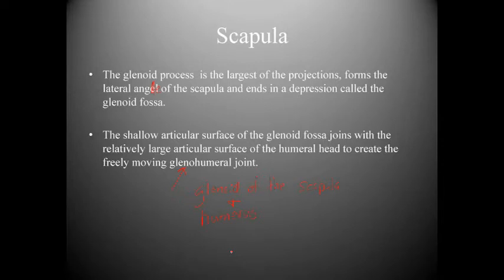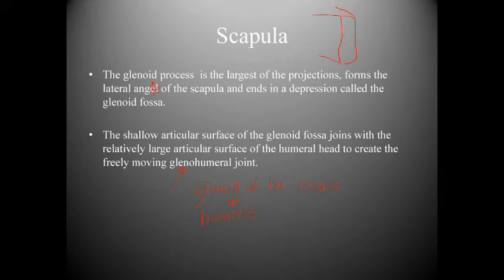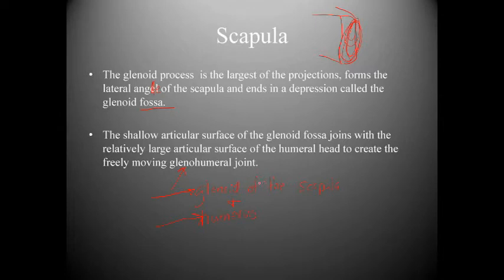The glenoid process is the largest of the four projections and forms the lateral angle of the scapula, ending in a depression called the glenoid fossa. The shallow articular surface of the glenoid fossa joins with the relatively large articular surface of the humeral head to create the freely moving glenohumeral joint.